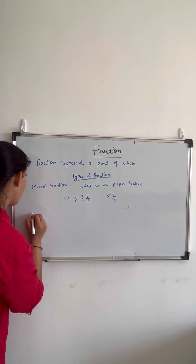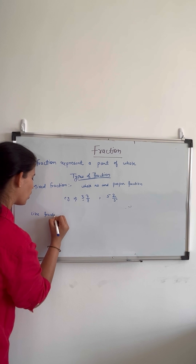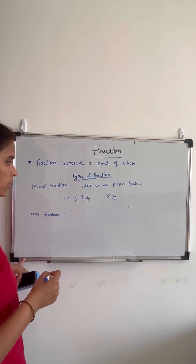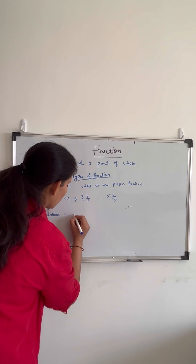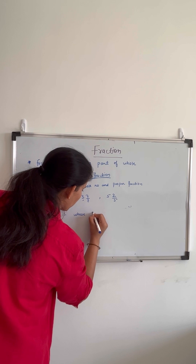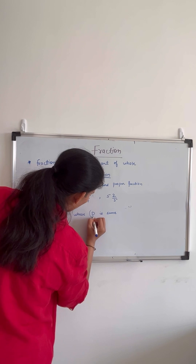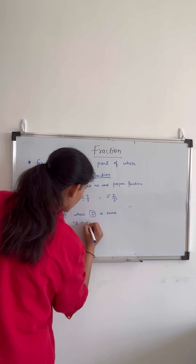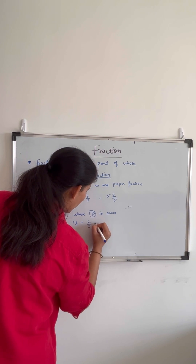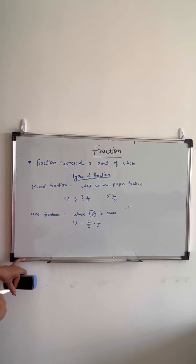The fourth type is like fractions. Like fractions are those fractions whose denominators are the same. For example, 2 by 3 and 1 by 3 — the denominators are the same. These types of fractions are called like fractions.